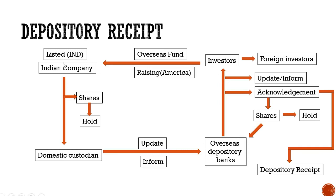In simple terms, if an Indian company wants to raise funds from overseas, it will first issue shares to a domestic custodian, who will update and inform the counterparty — the overseas depository bank — who will inform the investor, keep them updated, and issue them a receipt known as the depository receipt.